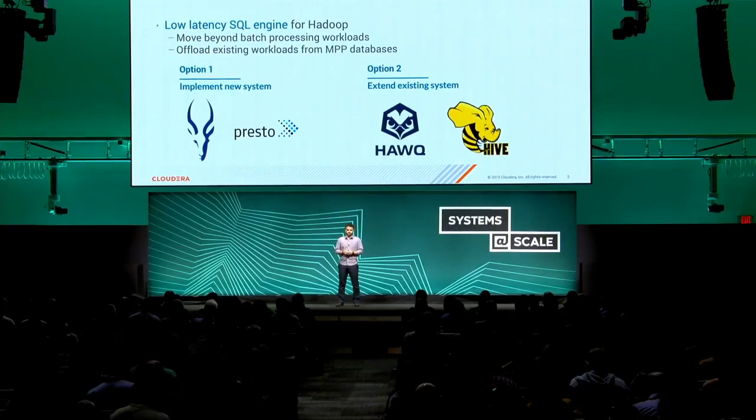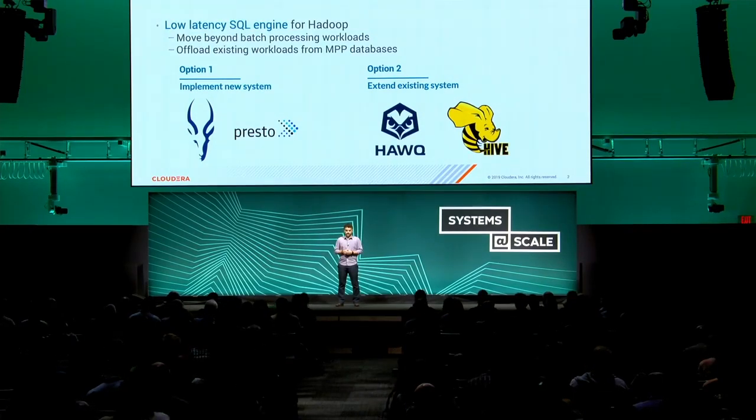There were mainly two options. Option one was to implement a new system based on existing techniques using MPP engines — this is what Cloudera did with Impala or Facebook did with Presto. Option two was to take an existing system and extend it to work well within Hadoop. This is what was done with Hawk, or what we chose to do with Hive, which was already working within Hadoop, but we had to broaden the use cases that it could cover.